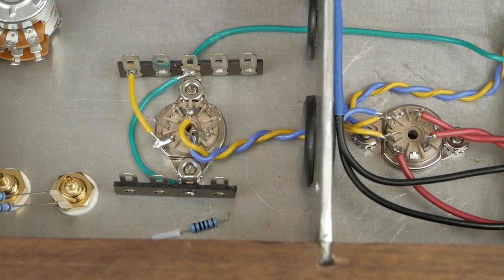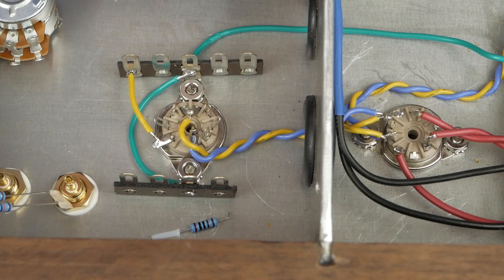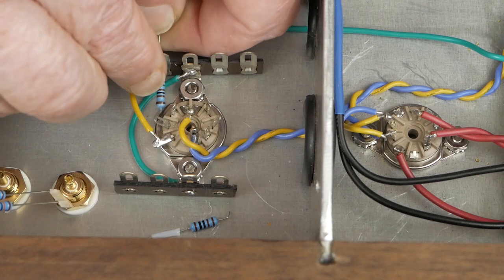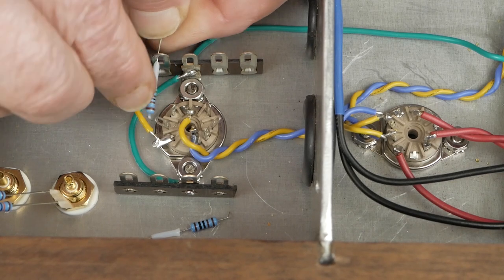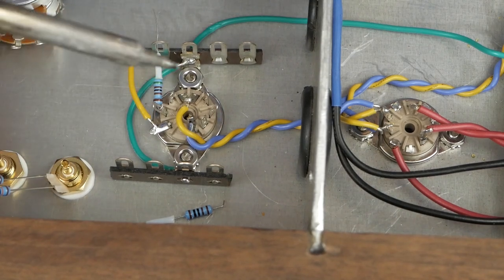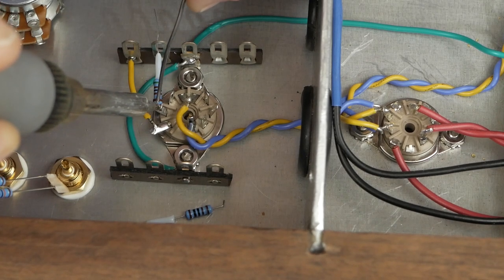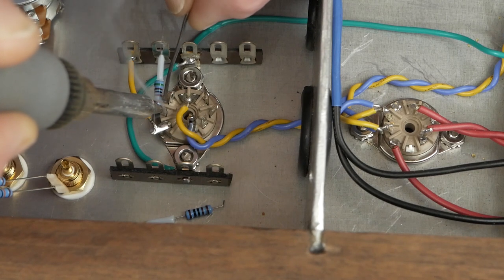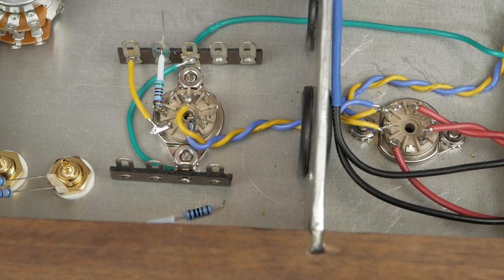So next we're going to come in and put our 5k grid stopper on the input tube. And we are going to go ahead and go with the 5k, since there is no input attenuation on this amp. It's not going to hurt to have a little breadth of it. We want this resistor as close to this pin socket as we can, and that gives the maximum amount of grid stoppage. So there's that end.